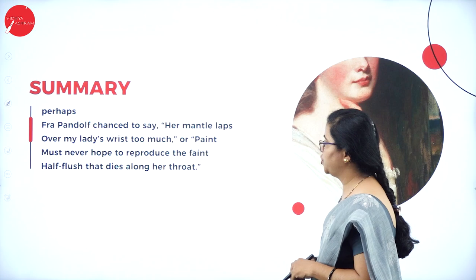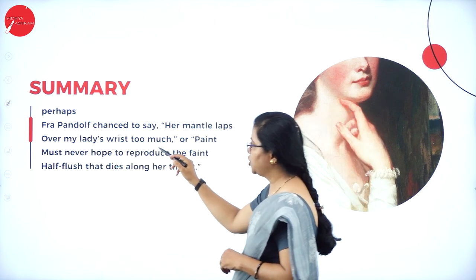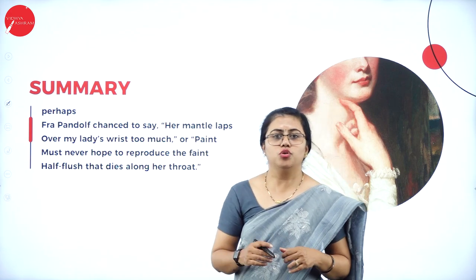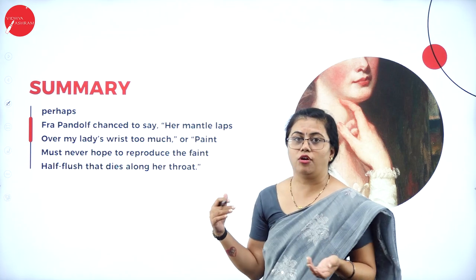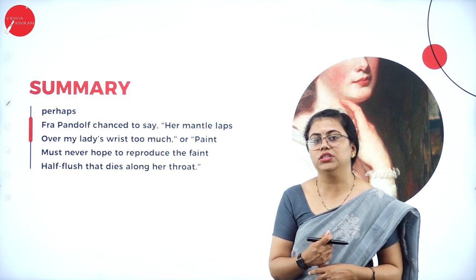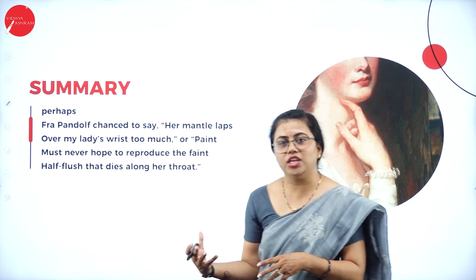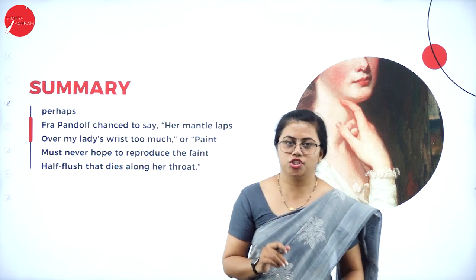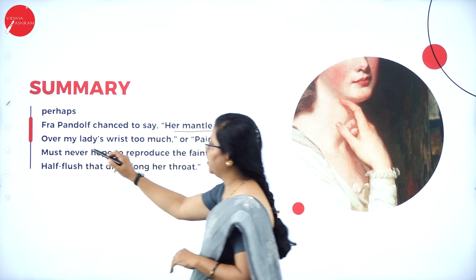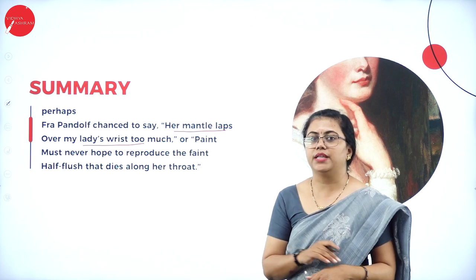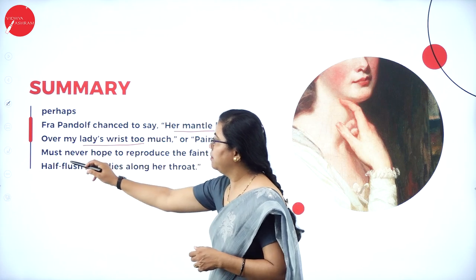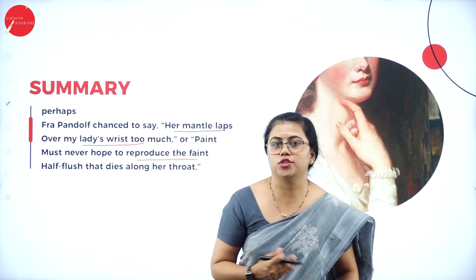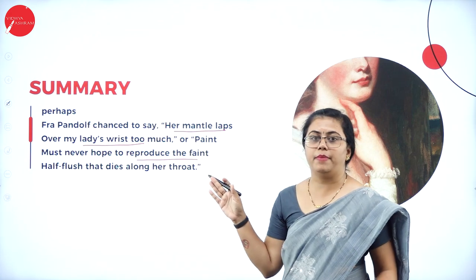'Perhaps Fra Pandolf chanced to say her mantle laps over my lady's wrist too much, or paint must never hope to reproduce the faint half flush that dies along her throat.' Fra Pandolf had commented on minute details — that her mantle was covering her wrist too much, and that the faint flush along her throat also needed to be captured in the painting. These were all Fra Pandolf's ideas.